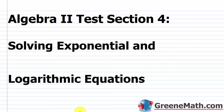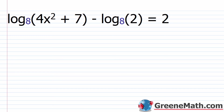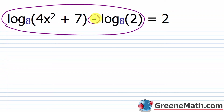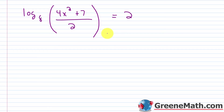Hello and welcome to Algebra 2 Test Section 4 on solving exponential and logarithmic equations. We want to solve each equation. We have log base 8 of (4x squared plus 7) minus log base 8 of 2 is equal to 2. I want to condense the left side — same base, subtraction — so I write log base 8 of (4x squared plus 7) over 2, equals 2. Setting this up in exponential form, 8 raised to the second power, which is 64, is equal to (4x squared plus 7) over 2.